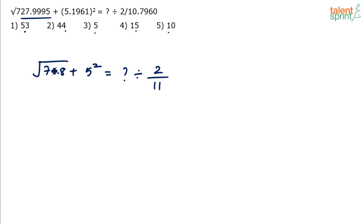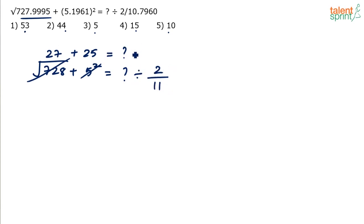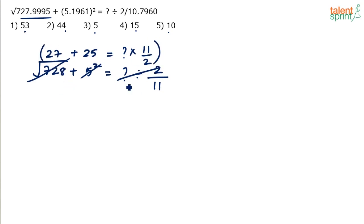Square root of 728 is very close to square root of 729, which is 27. And 5 squared is 25. So we have 27 plus 25 on the left-hand side. From simplifications, when you have division followed by a fraction, convert the division to multiplication and reciprocate the fraction — so 2 by 11 becomes 11 by 2. The question becomes: 27 plus 25 equals question mark times 11 by 2.